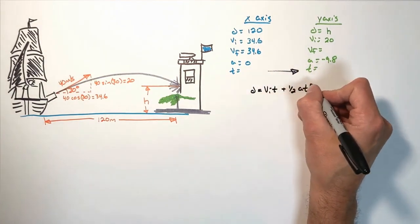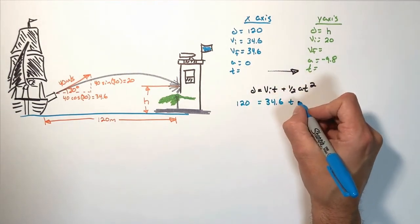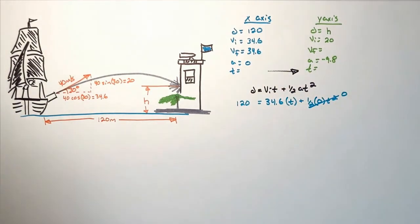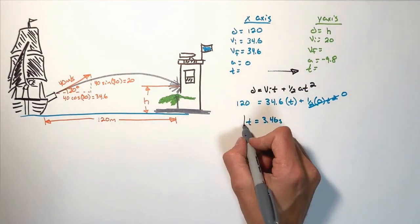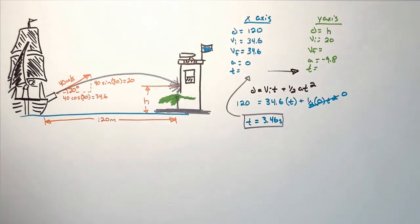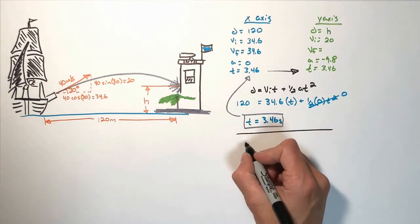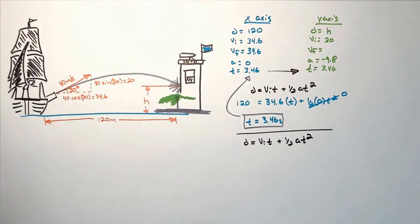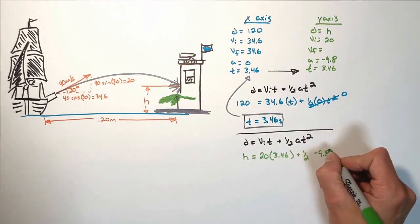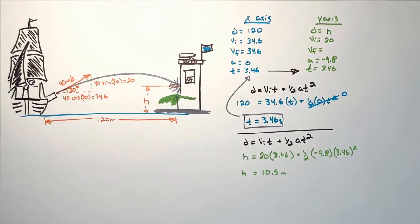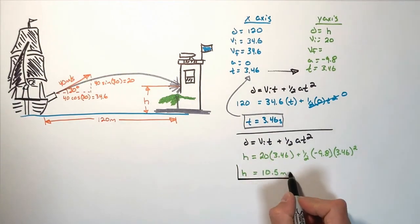The cannonball has to be in the air the same amount of time in both the x and the y-axis, so we transfer that time to the y-axis. Now we have enough information in the y-axis to solve for the height of the cannonball when it strikes the fortress. Choosing the correct kinematic equation where height is the displacement and plugging in our values from the y-axis, we find the cannonball hits the fortress 10.5 meters above the waterline.